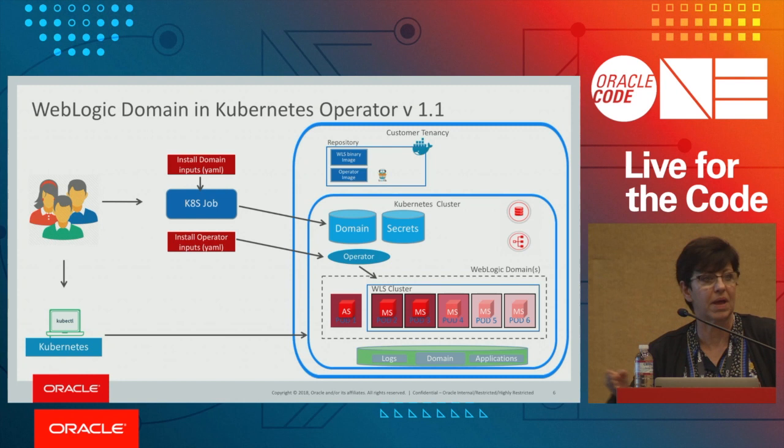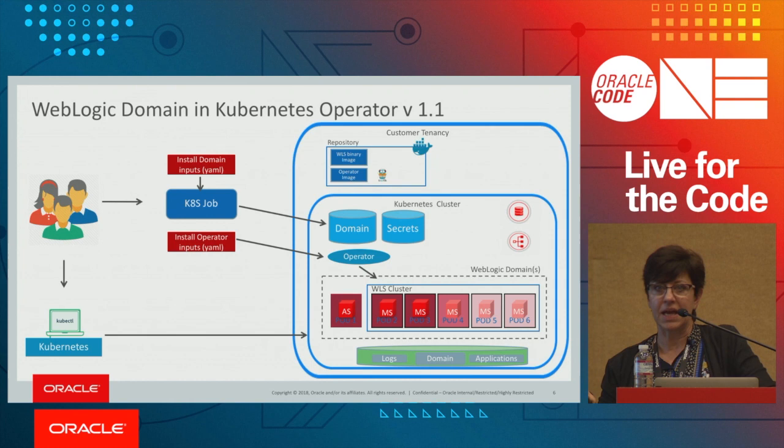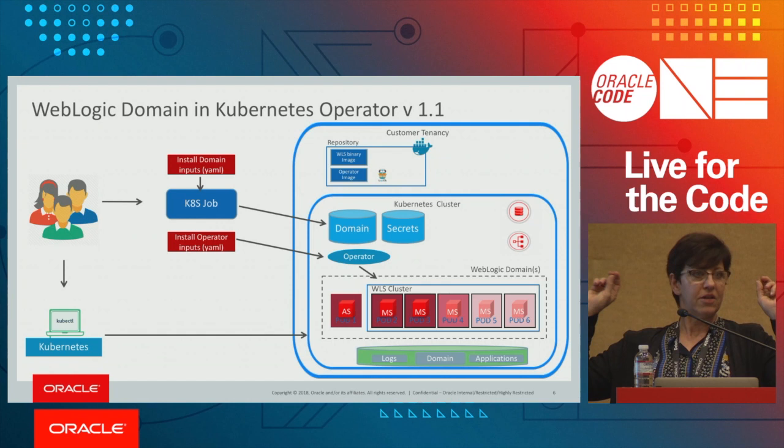The domain UID gives you the ability to have different domains with the same name that are unique by UID. For example, you might have the same domain in a development namespace and a testing namespace in the same cluster — both named domain one — but the domain UID makes them unique.